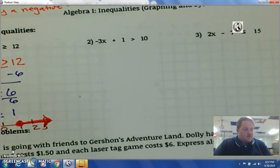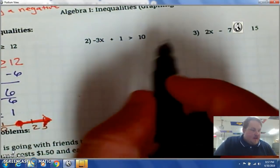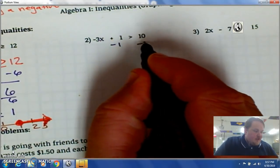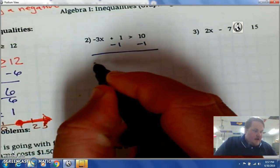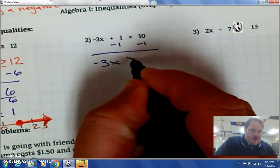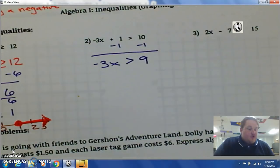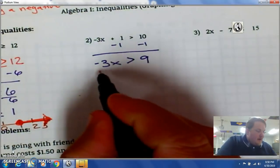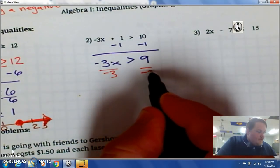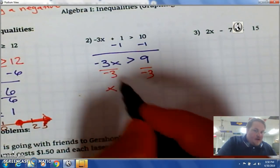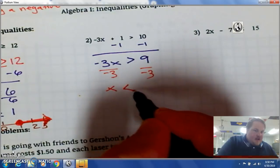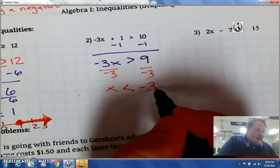Number 2. Solve like an equation. Subtracting 1 from both sides. And I get negative 3x is greater than 9. Well, now I have to divide by negative 3. x I divide it by negative. So, I flip the sign. Is less than negative 3.